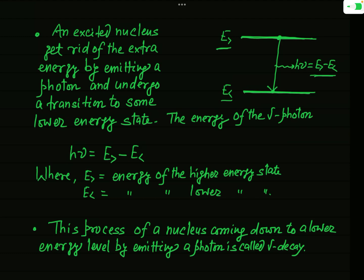If the frequency of the emitted gamma photon is ν, then the energy of the emitted gamma photon equals E_greater minus E_lesser — that is, the energy of the emitted photon equals the difference in energy of the two levels between which the transition takes place. This process of a nucleus coming down to a lower energy level by emitting a photon is called gamma decay.